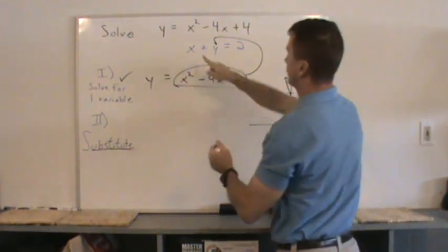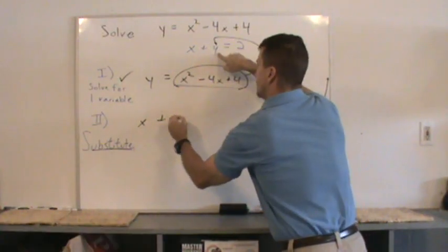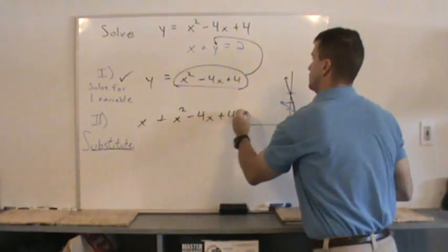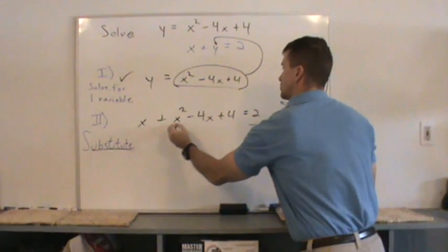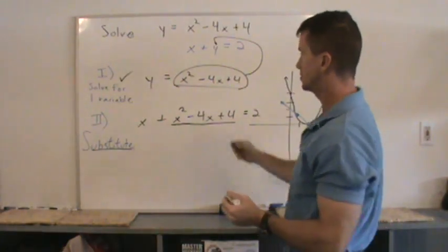That's what we now have. I have x plus, substitute this, x squared minus 4x plus 4 equals 2. This portion right here just was substituted for that one. And I'll just solve this.